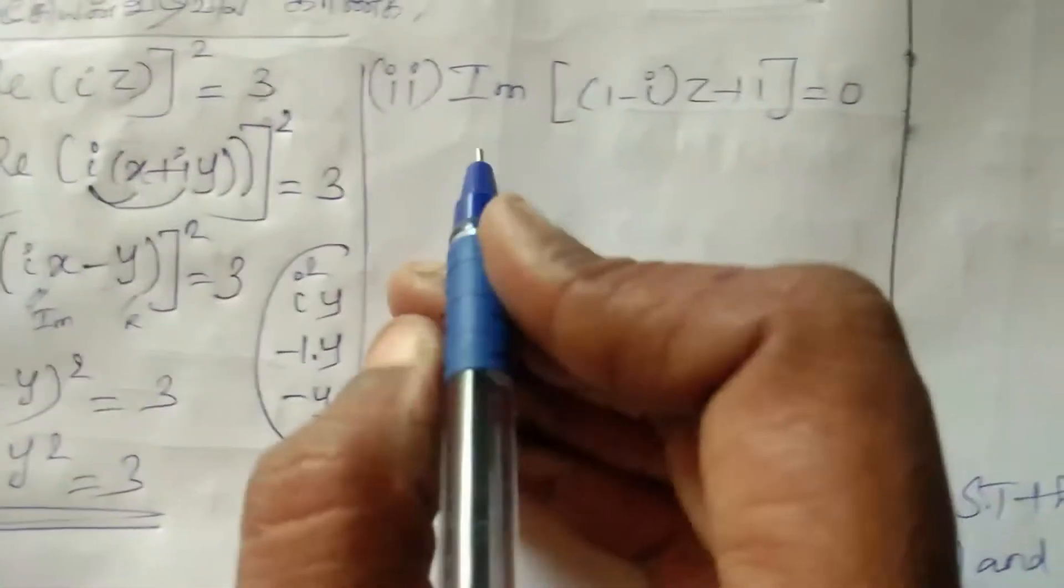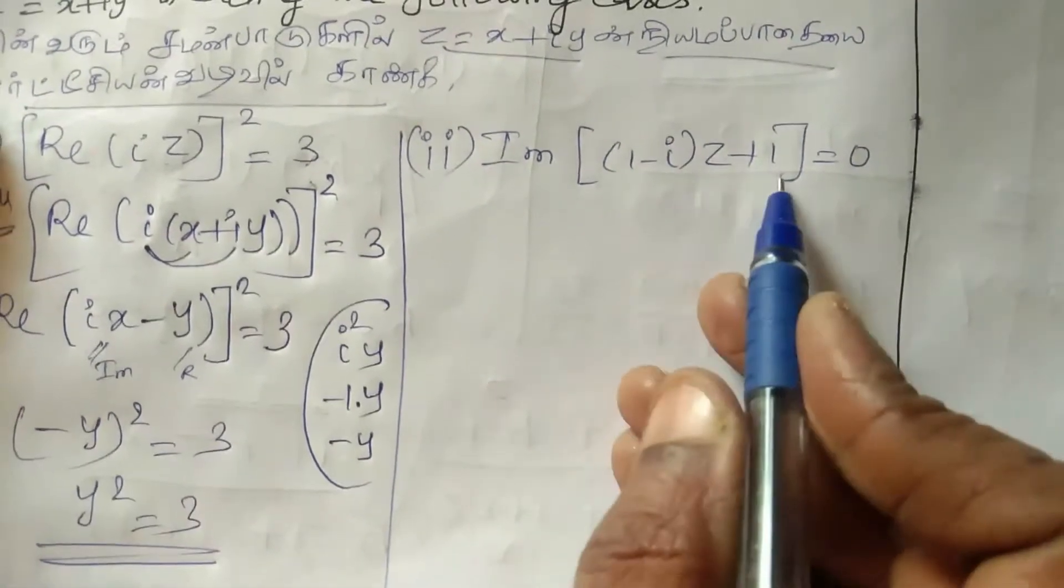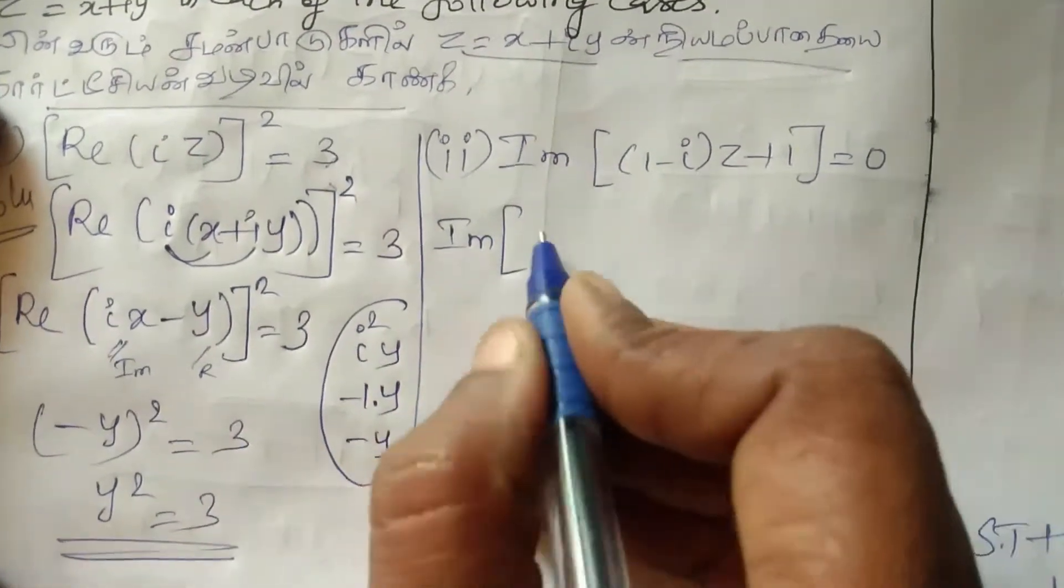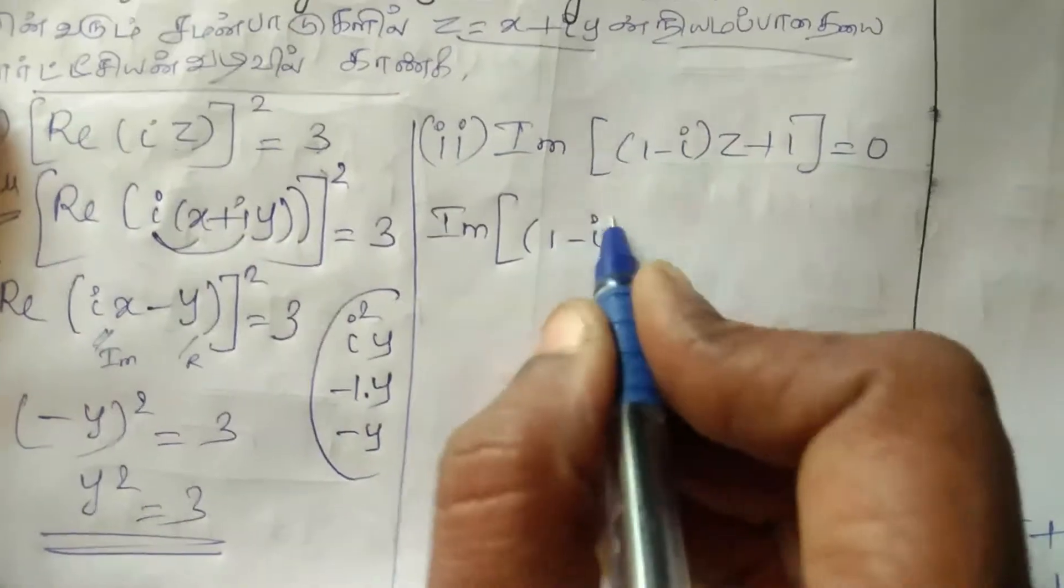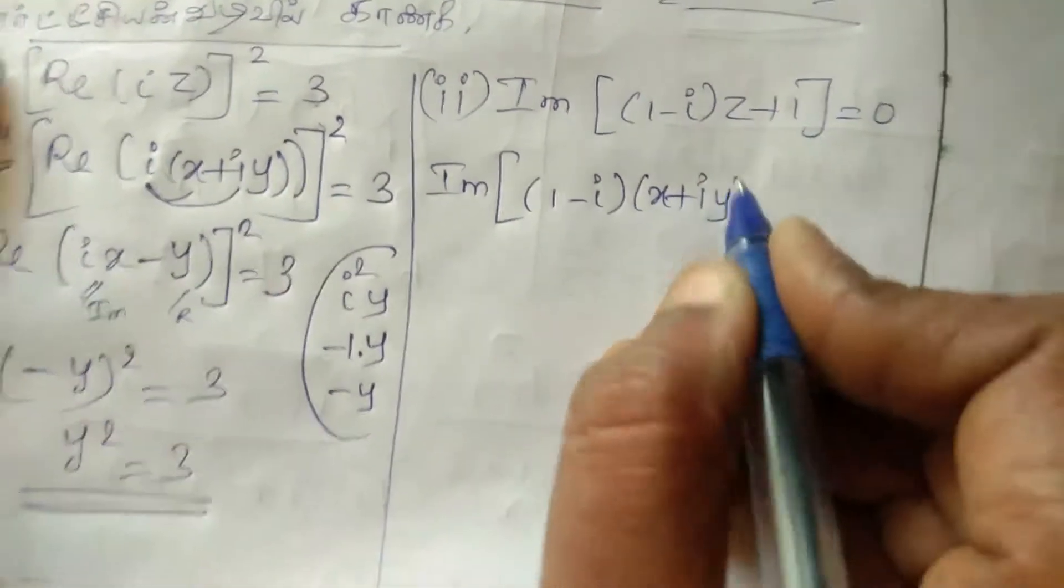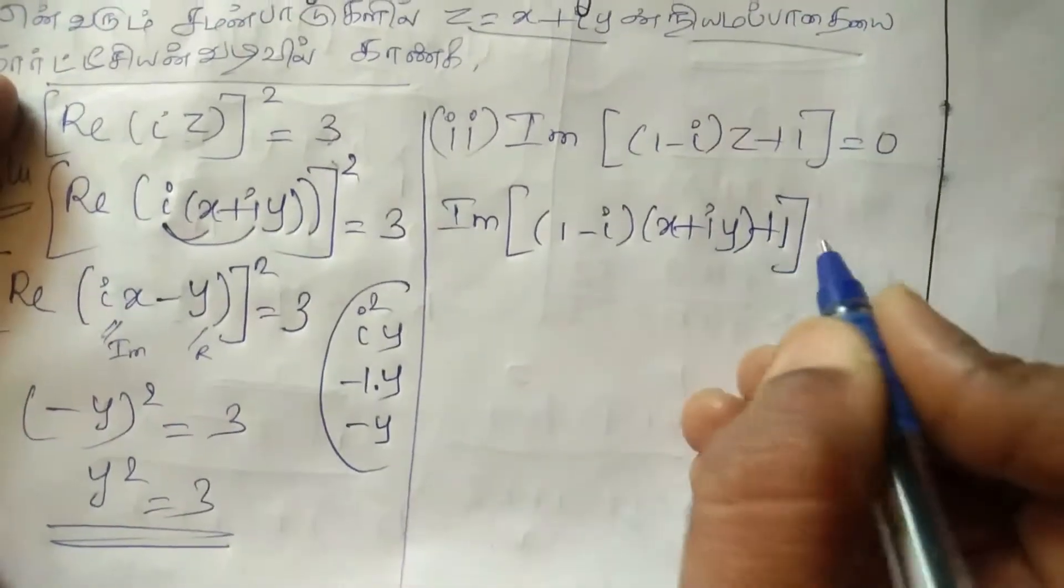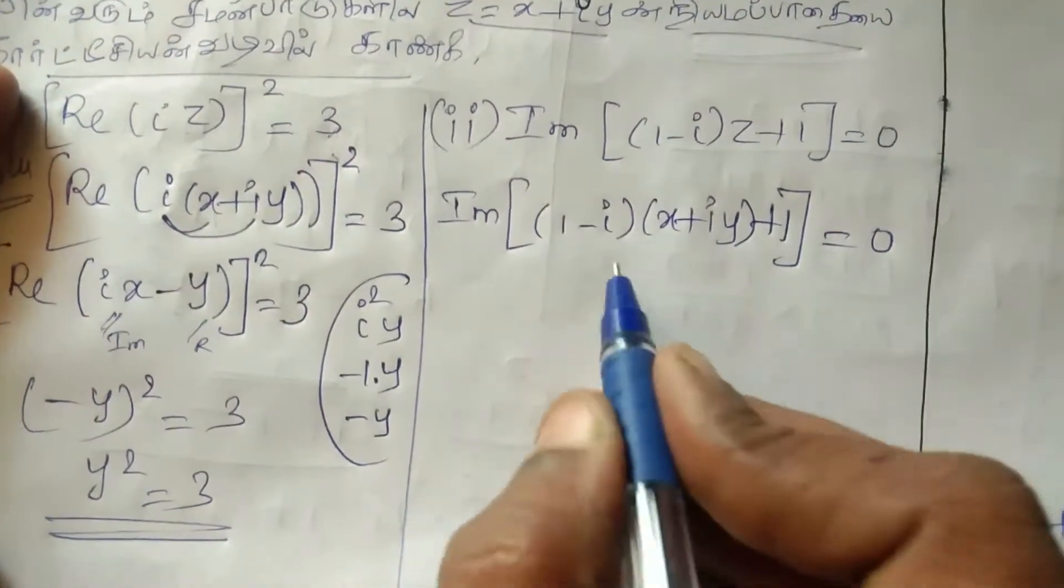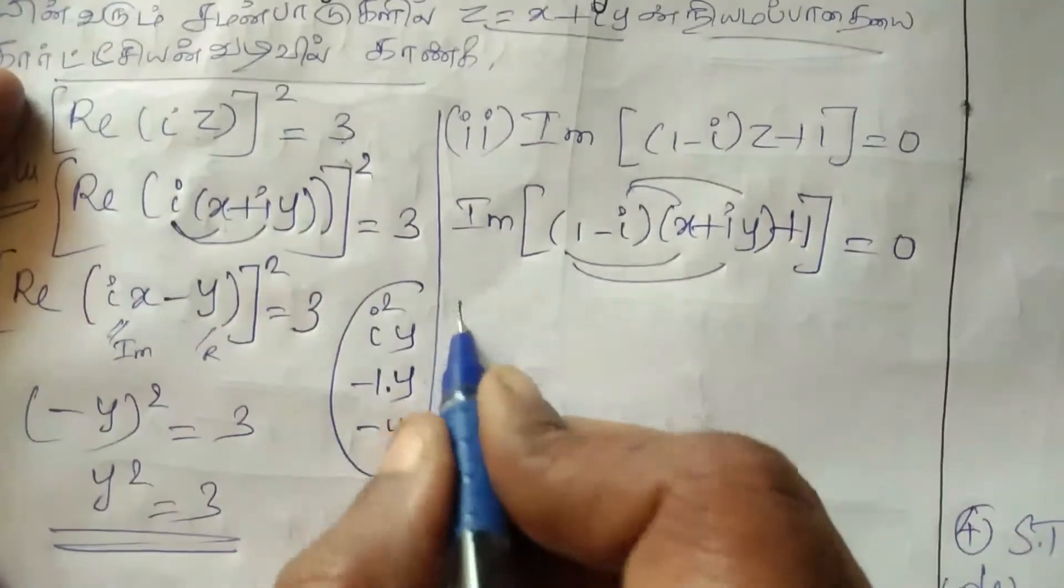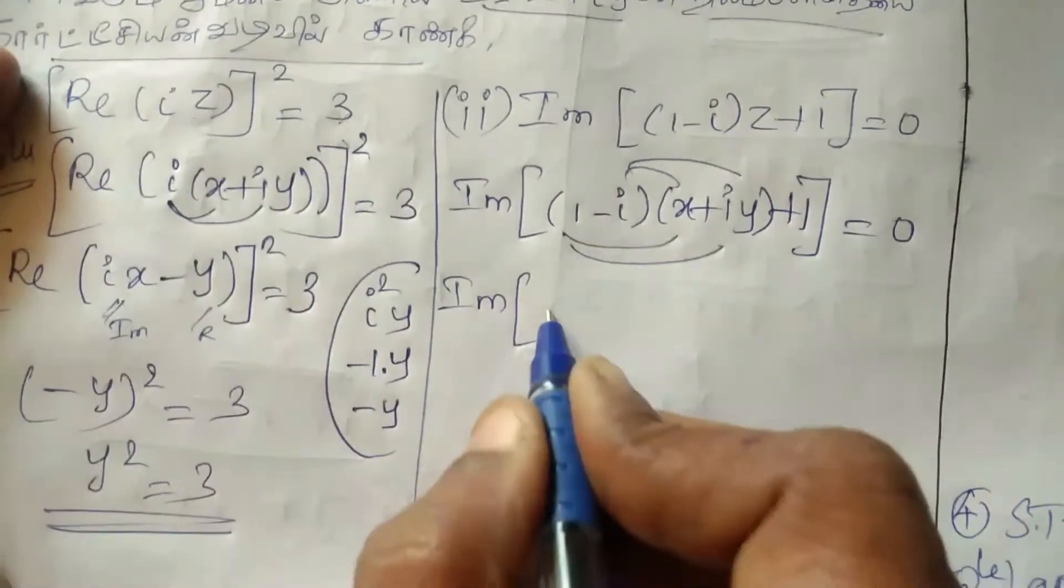Second question: imaginary of 1 minus I into Z plus 1 equal to 0. So imaginary of 1 minus I into Z which is X plus IY plus 1 equal to 0. Substituting: 1 into X is X, 1 into IY is IY.